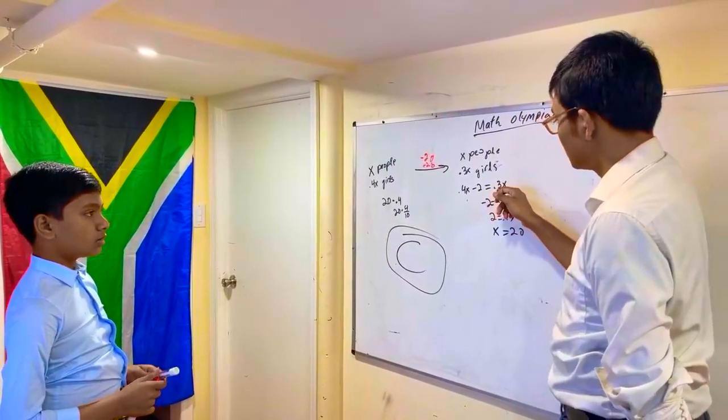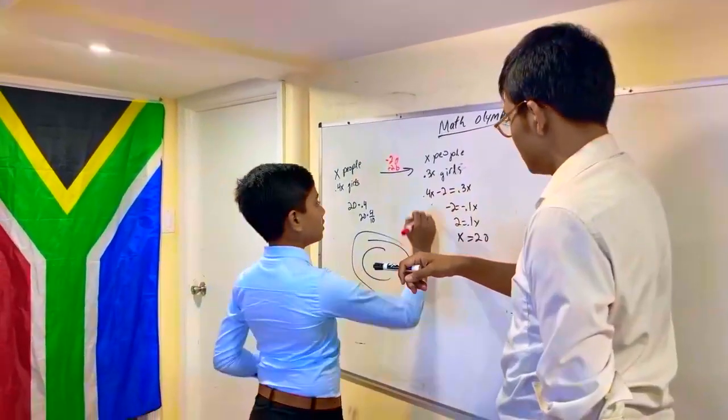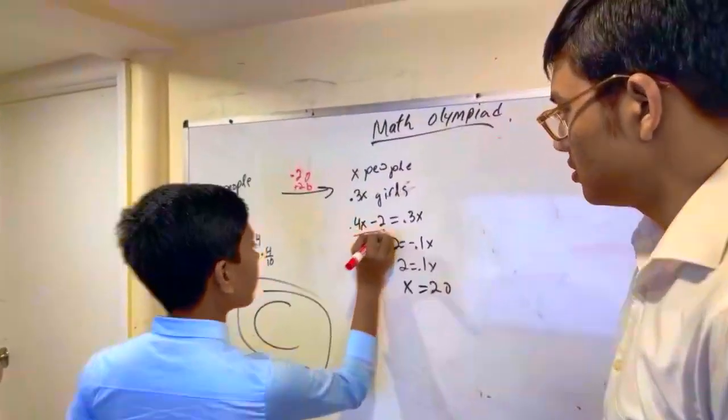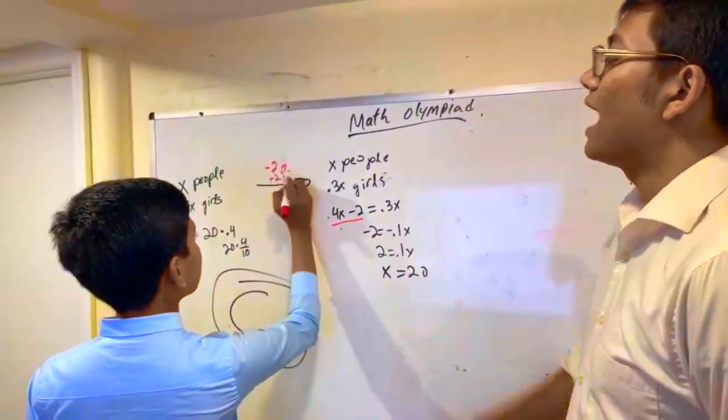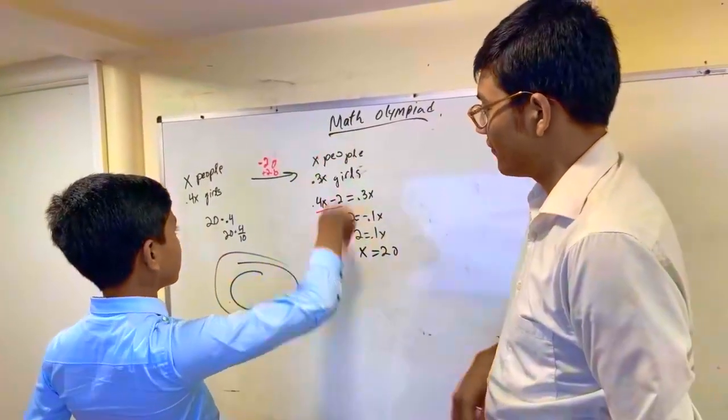Minus two is equal to the number of girls originally? No, uh, no, yes. Point four x minus two represents the amount of girls after two girls leave. After, this is before. No, this is after the two girls, this is after.